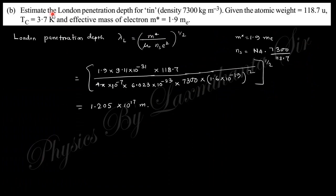Next is: Estimate the London penetration depth for tin whose density is given, atomic weight, and critical temperature. This is the formula. Put this value: m star is nothing but 1.9 me, 1.9 mass of electron, mu naught is 4π × 10^-7, ns is the density which is 7300 divided by the atomic weight, and e squared is the electron charge. You will obtain this expression.